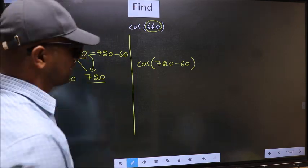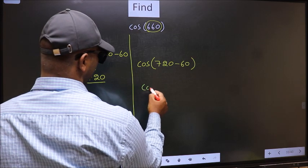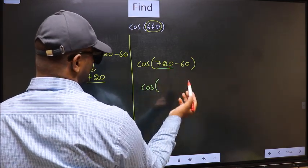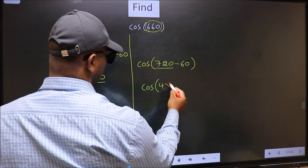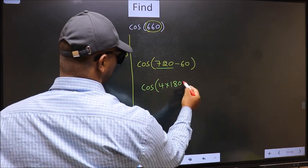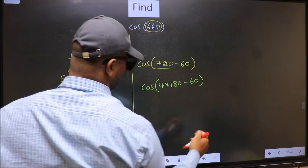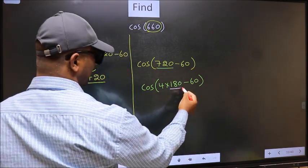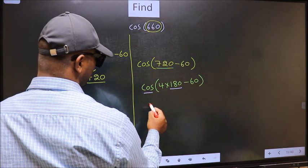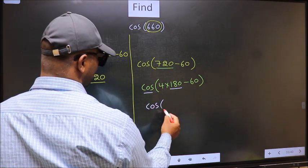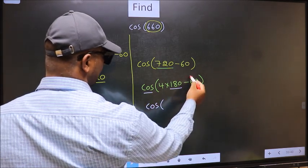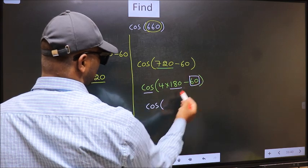Next, cos, in place of 720 now we write 4 into 180 minus 60. Next, here we have 180, so cos is not going to change. It will remain cos. And inside, we get this angle 60.